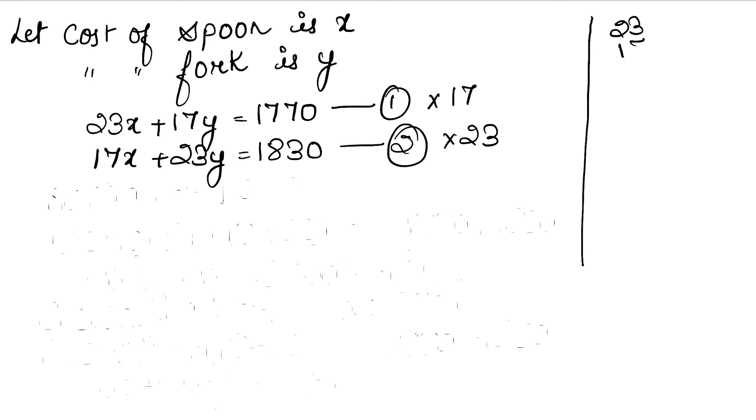23 divided by 17: seven 3s are 21, carry 2. Seven 2s are 14, 15, 16, which gives 391. So here is 391x plus 17 into 17 is 289, so 289y equals 1770 times 17. Here 0 as it is, 177 multiplied by 17.